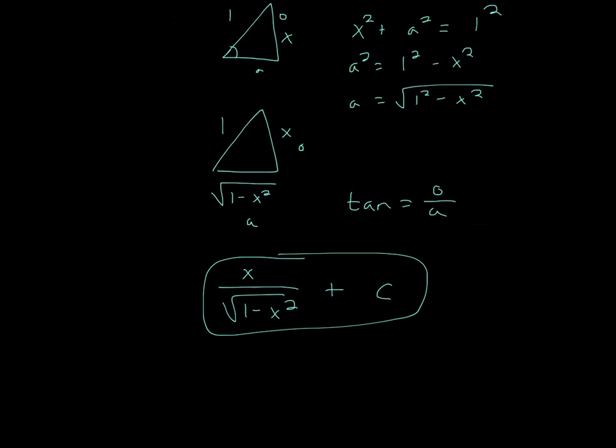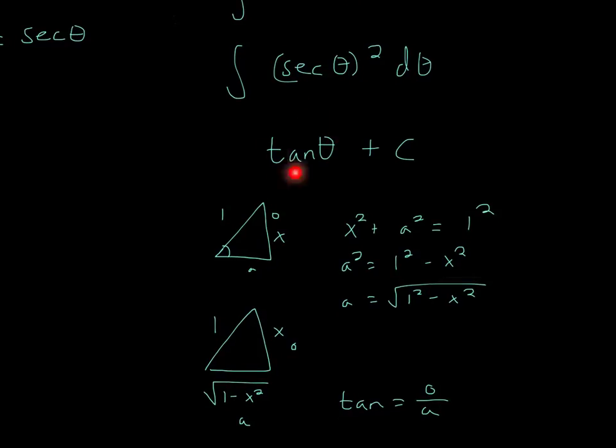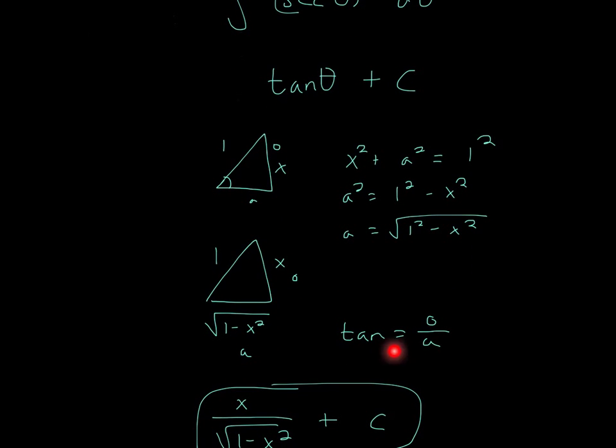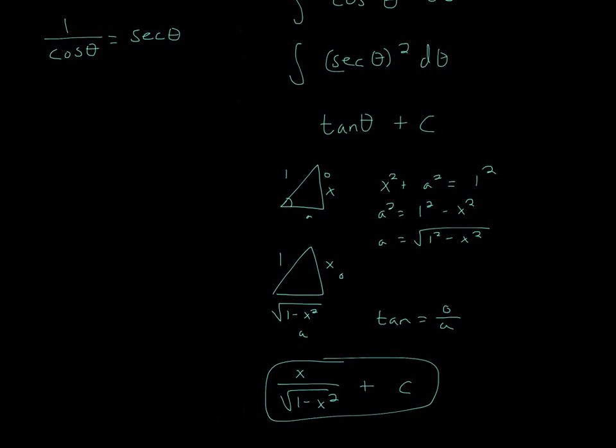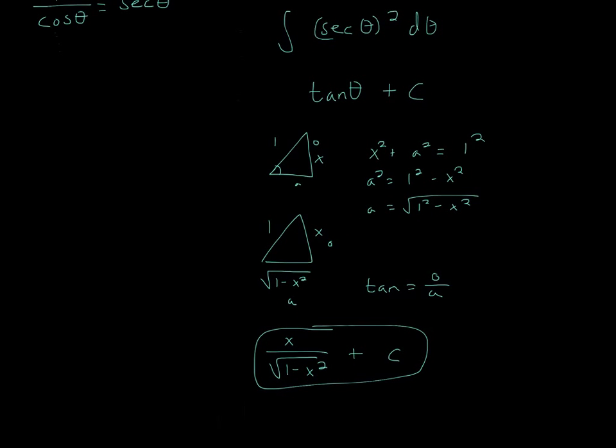So why did we do all that? Well, because we need to change this tangent into x form. So, what is tangent in this case? Tangent is opposite over adjacent. So opposite over adjacent, that means to substitute tangent, we'll do opposite, which is x, over adjacent, which is square root of 1 minus x squared plus c.